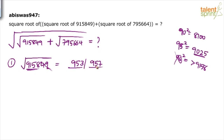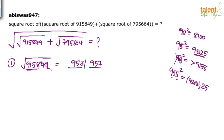Step 3: determine whether the answer is 953 or 957. Take the number exactly between them, which is 955. Find 955 squared: number ends in 5, so append 25; multiply 95 by 96, which is 9025 plus 95 = 9120, giving 912025. Compare with 915849 — since 915849 is more than 912025, the answer must be more than 955, so the square root of 915849 is 957.